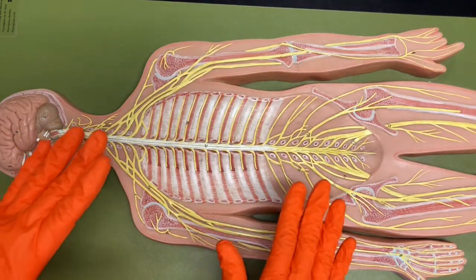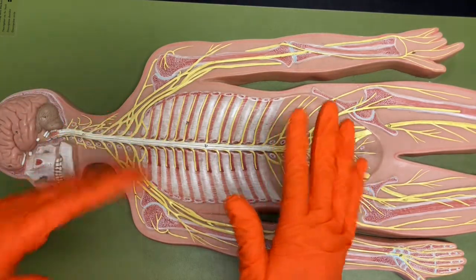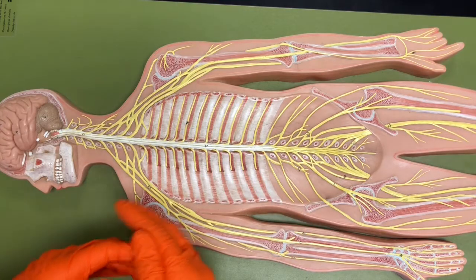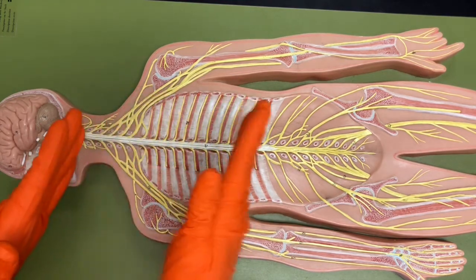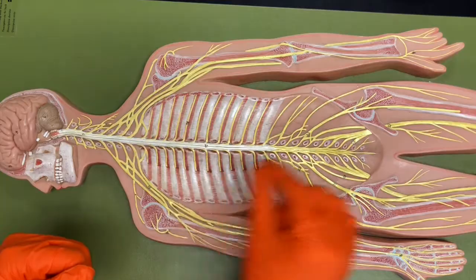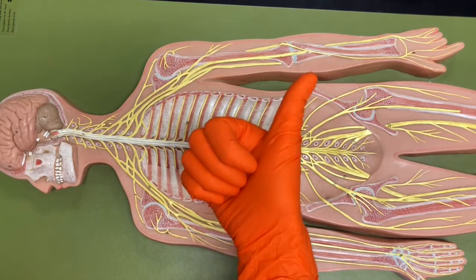So I hope those tips help you learn the plexuses. Always go a little bit slow. If you kind of talk through the location and where the branches come off, I think you guys will do just fine with this.